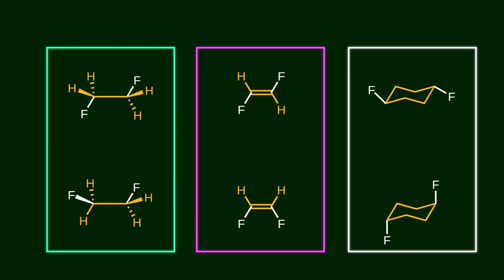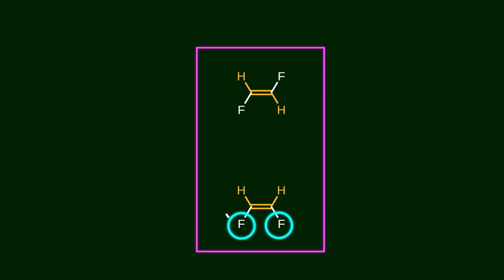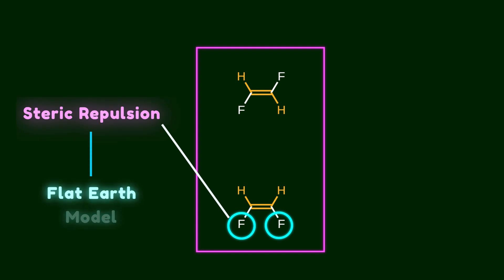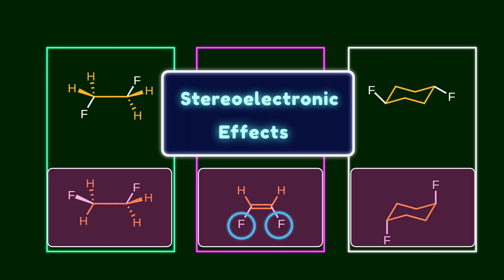The answers may or may not be surprising, depending on how far you are separated from your undergrad organic class. Take 1,2-difluoroethane as an example. You might think that the two fluorines create serious steric hindrance, so it makes sense that the trans conformer is more stable than the cis conformation. But this explanation is wrong. In other words, relying on steric repulsion here is like using the flat Earth model. In all cases, the bottom structure is more stable because of stereoelectronic effects.